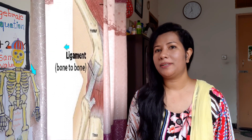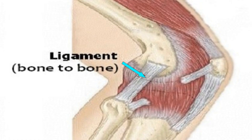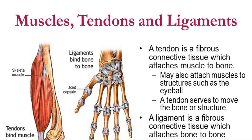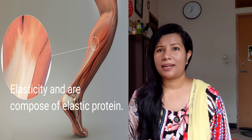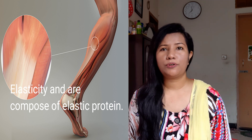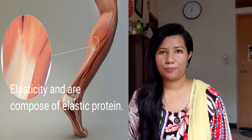Ligaments are composed of a combination of white and yellow fibers, and the number of elastic yellow fibers is excessive. A branching network of elastic fibers is scattered in this kind of tissue. The fibers stay separate instead of in bundles, and they are elastic and composed of elastic protein.